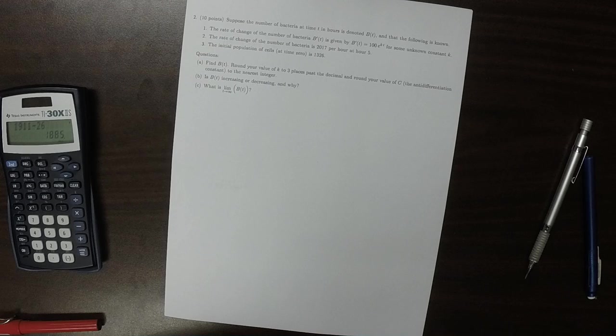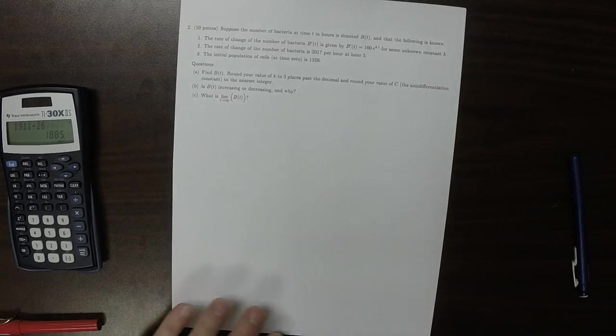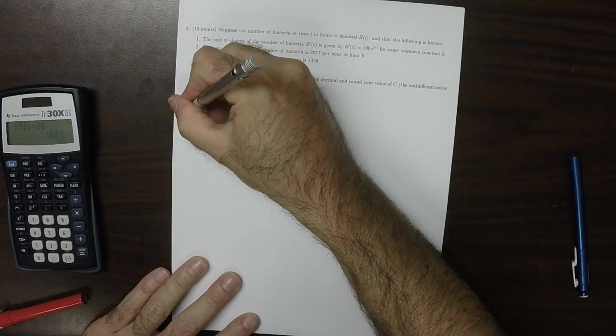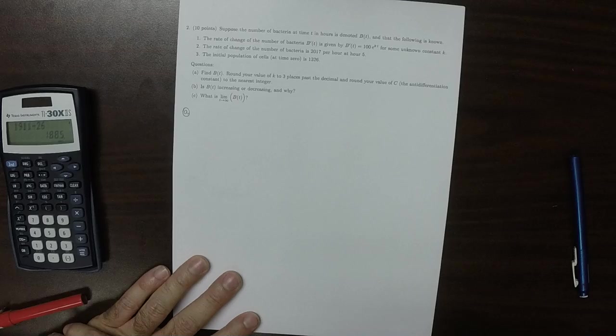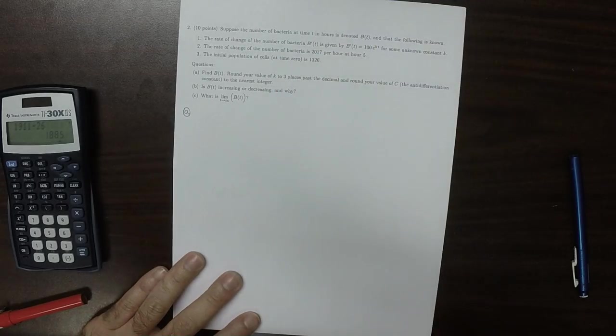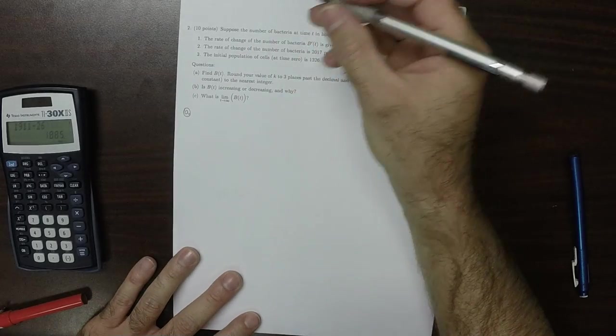So we're given all of this information about b. The first question is to find b. So for part a, the first thing we need to do is find k.